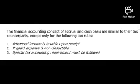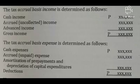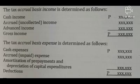Number three: special tax accounting requirements must be followed. There are cases wherein the tax law itself provides for a specific accounting treatment of an income or expense. In that case, the method specified by the tax law shall be used, even if it differs from the accounting method used by the taxpayer. Under tax accrual basis, gross income equals cash income plus accrued or uncollected income plus advanced income. Total deductions equal cash expenses plus accrued or unpaid expenses plus amortization of prepayments and depreciation of capital expenditures.